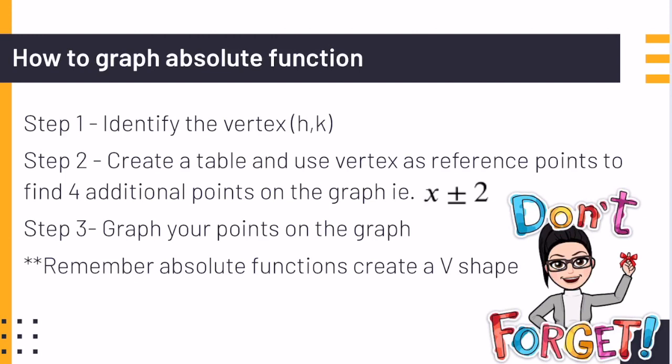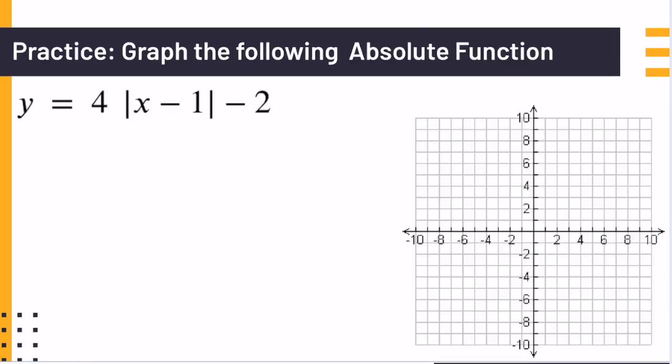Now to graph your absolute function, the first step is to identify the vertex. After you identify the vertex, using the x value, which is h, you would add or subtract two values. Then you will be able to create a table off of it, and you will graph these points by creating a V shape.